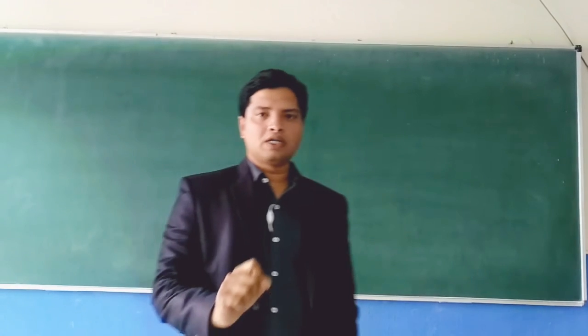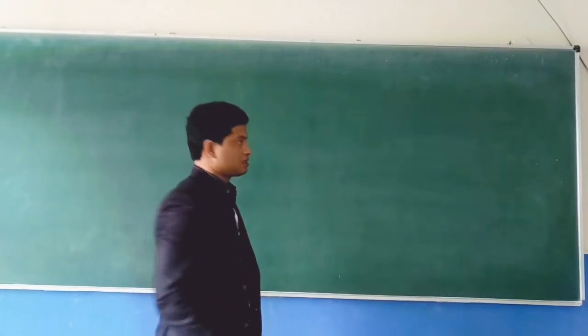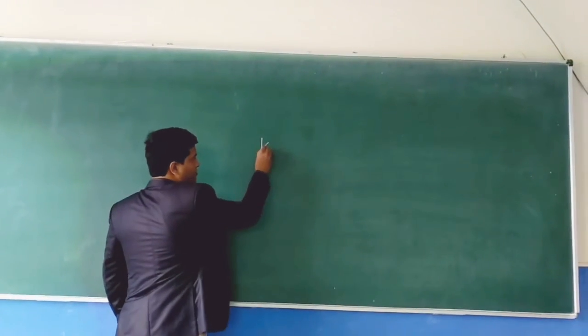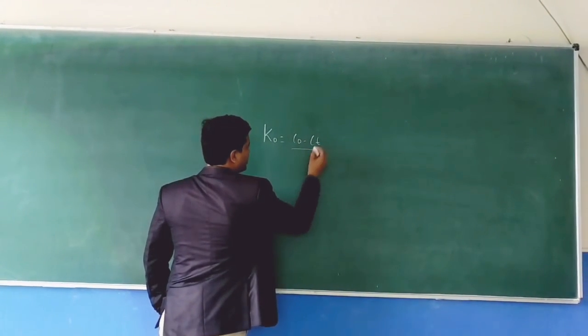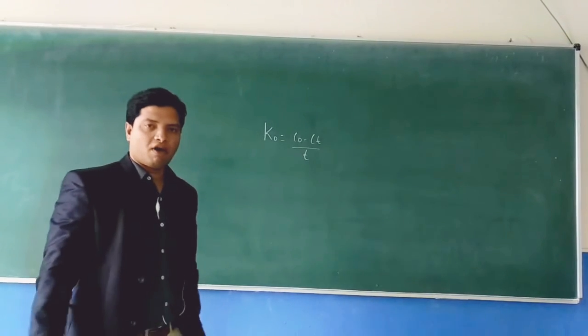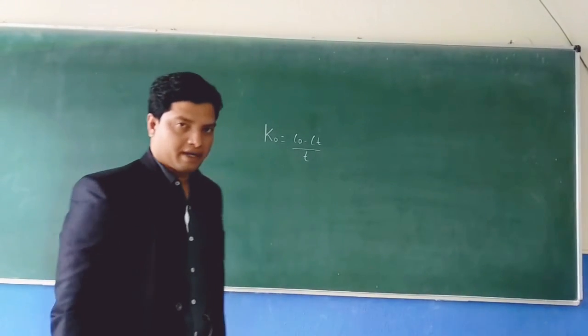To start with the graph, we should know the equation for zero order kinetics. The zero order kinetics rate equation is C0 minus Ct divided by T. This is the equation for zero order rate kinetics.